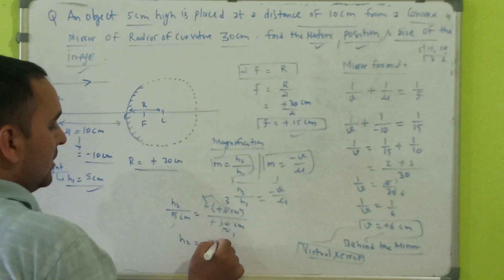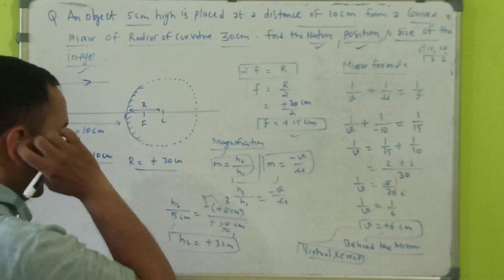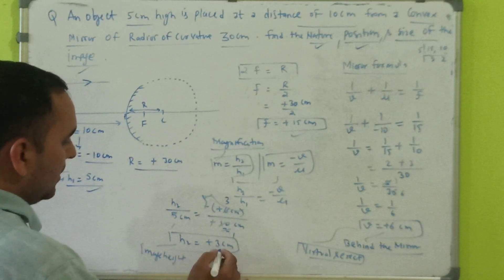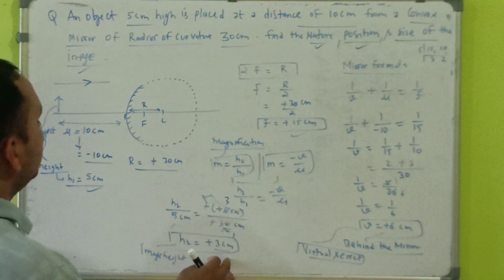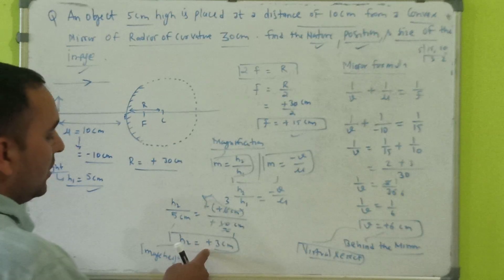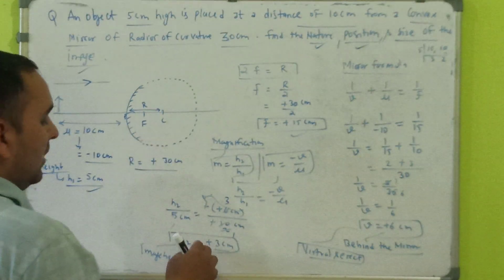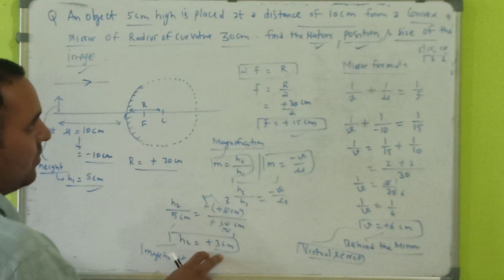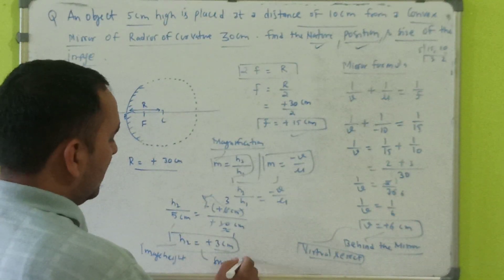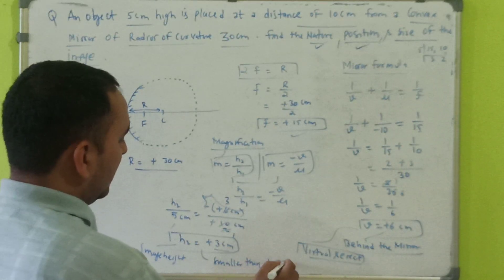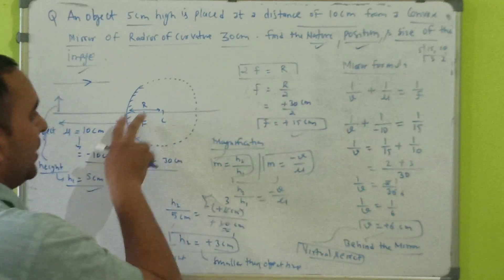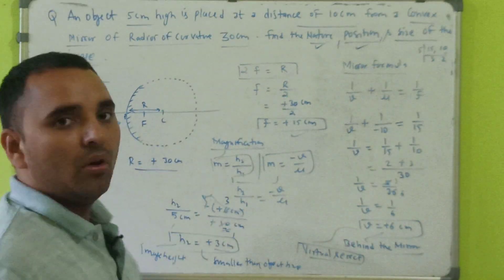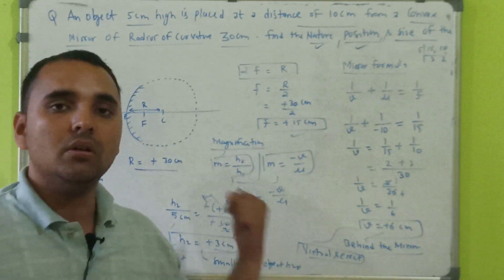Solving, h2 equals plus 3 centimeters. So the image height is plus 3 centimeters. The positive value indicates the image is forming above the principal axis. Comparing image height with object height, the image is smaller in size than the object. In summary: the position of the image is behind the mirror, the nature is virtual and erect, and the size of the image is smaller than the object size.